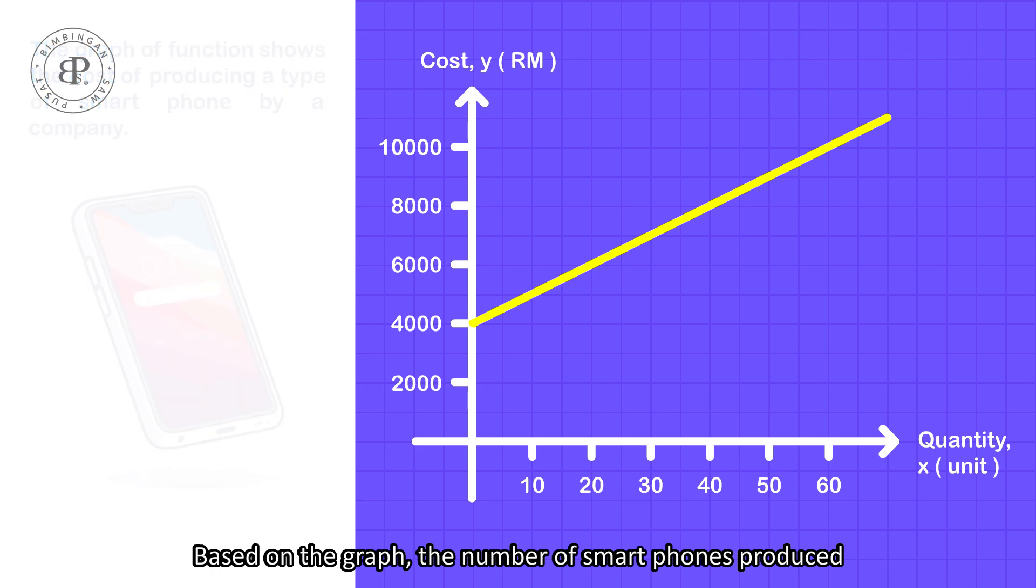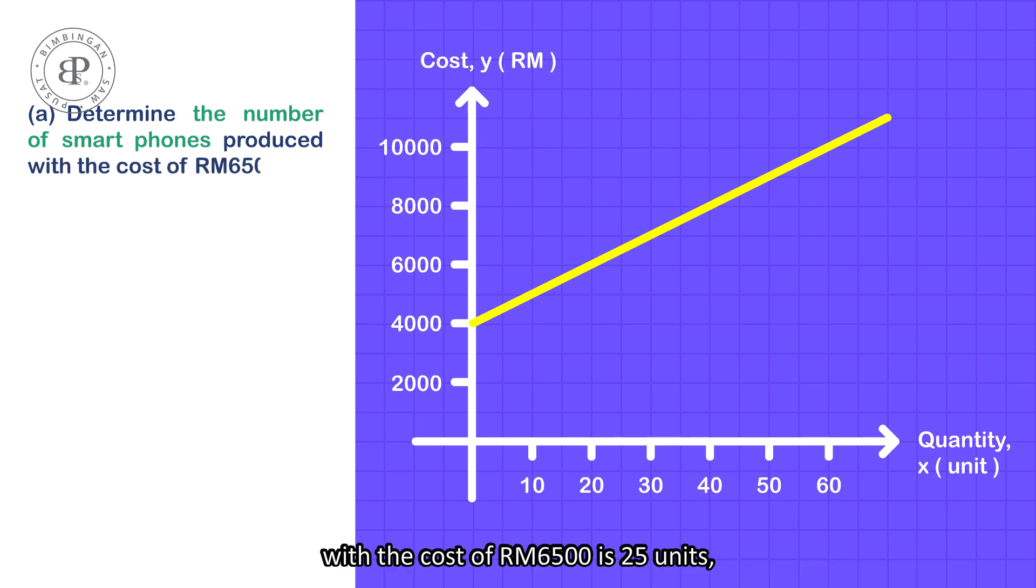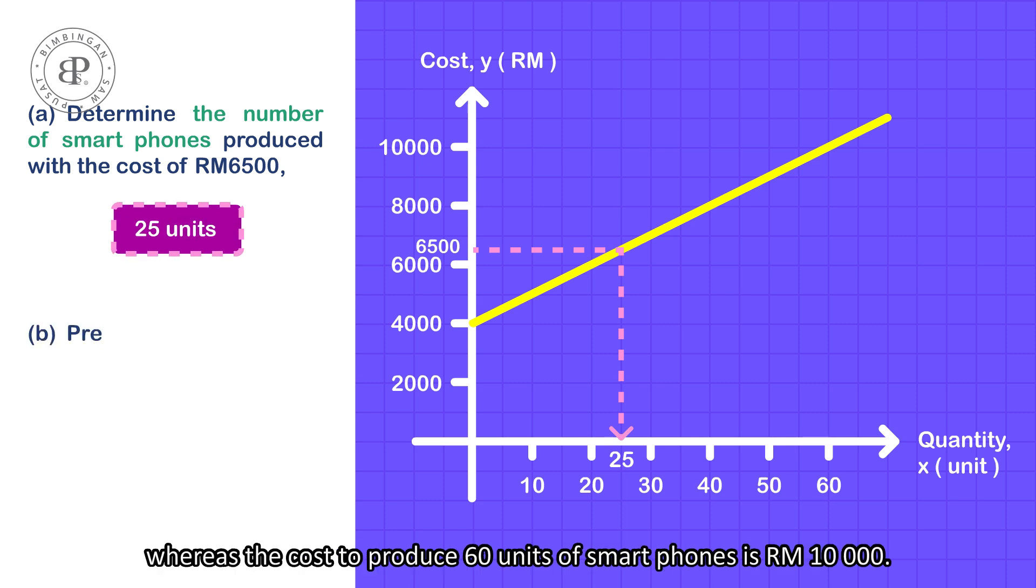Based on the graph, the number of smartphones produced with a cost of 6,500 ringgit is 25 units, whereas the cost to produce 60 units of smartphones is 10,000 ringgit.